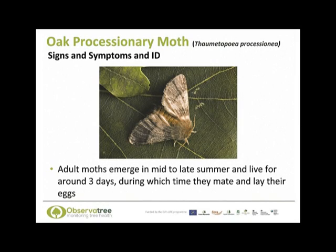What are the signs and symptoms of this pest? What do you need to be looking out for and when might you see something that could indicate that it is present? The adult moth has a very fluffy head and brown colouration. You might see it in mid to late summer as that tends to be when they emerge from their pupae. They only live for about three days, during which time they need to mate and lay their eggs.